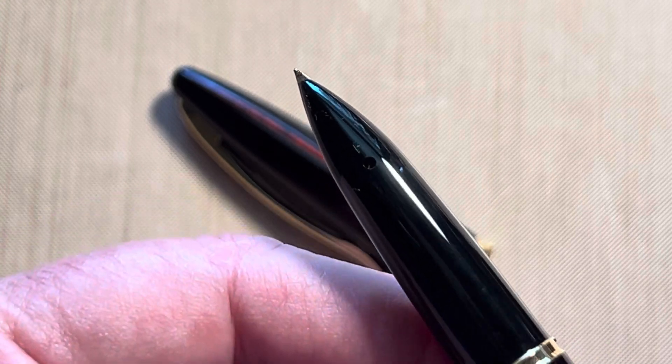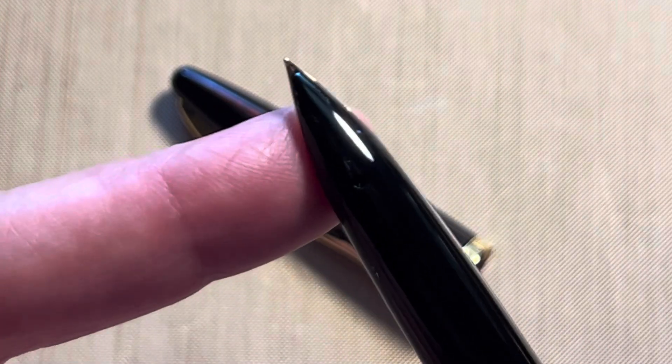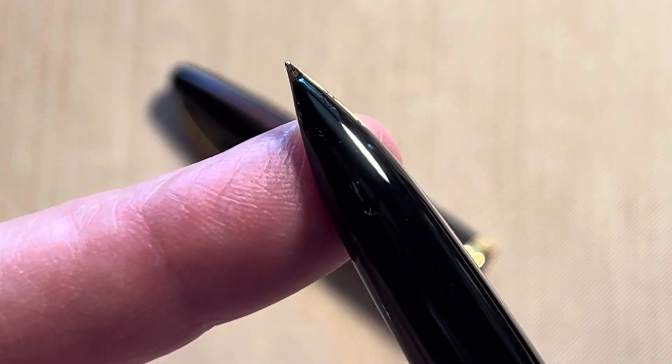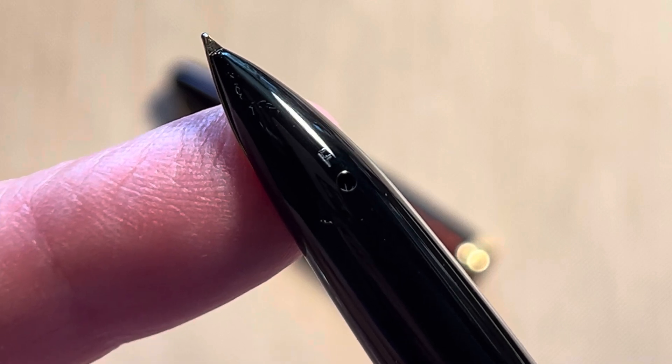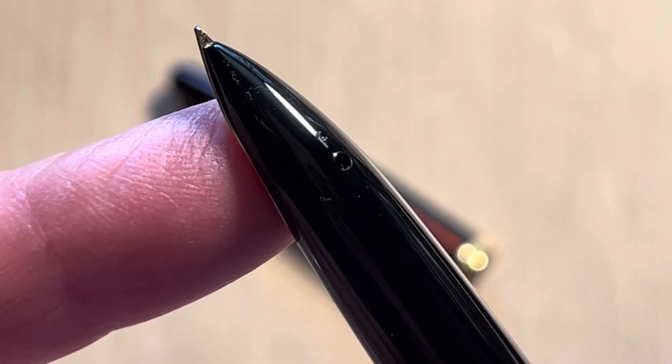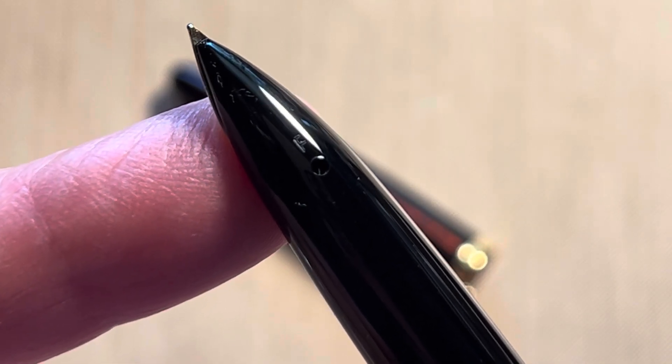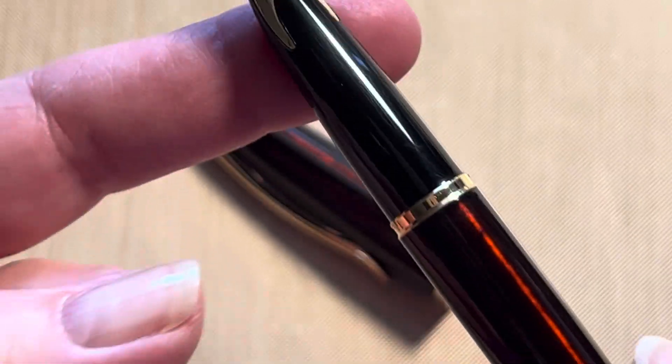Let's see what we get here if I can get this in for you. There's the F, right above the top of the breather hole there. So that's where your nib size is listed.